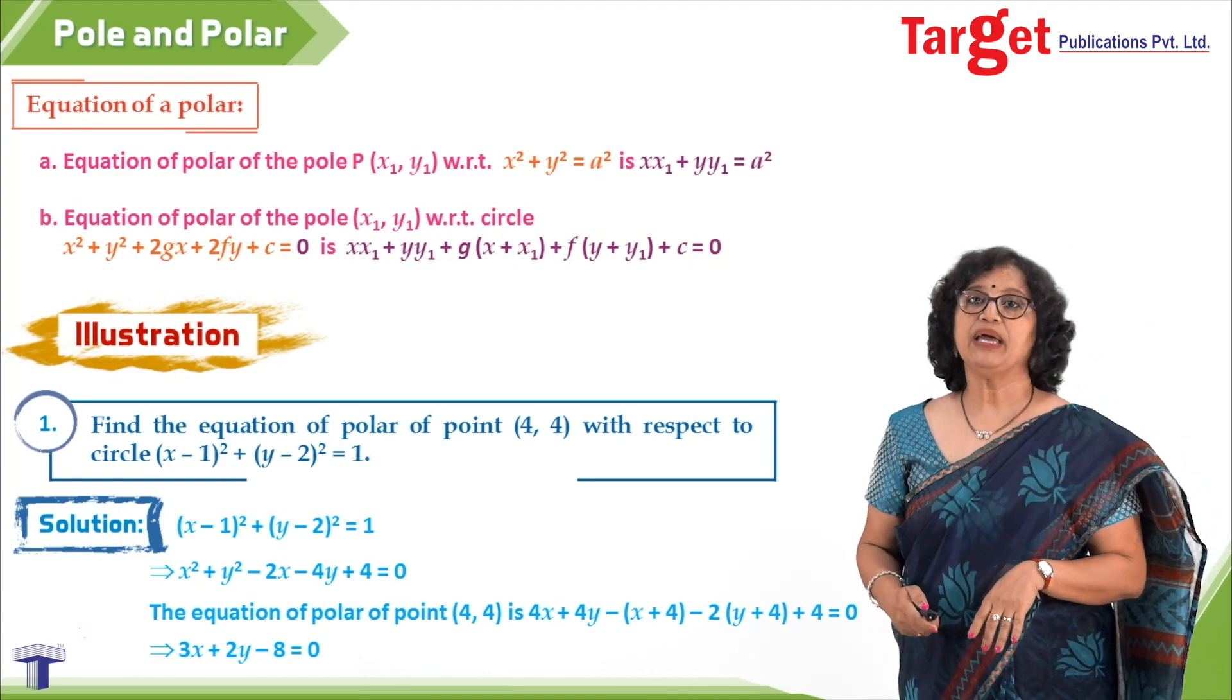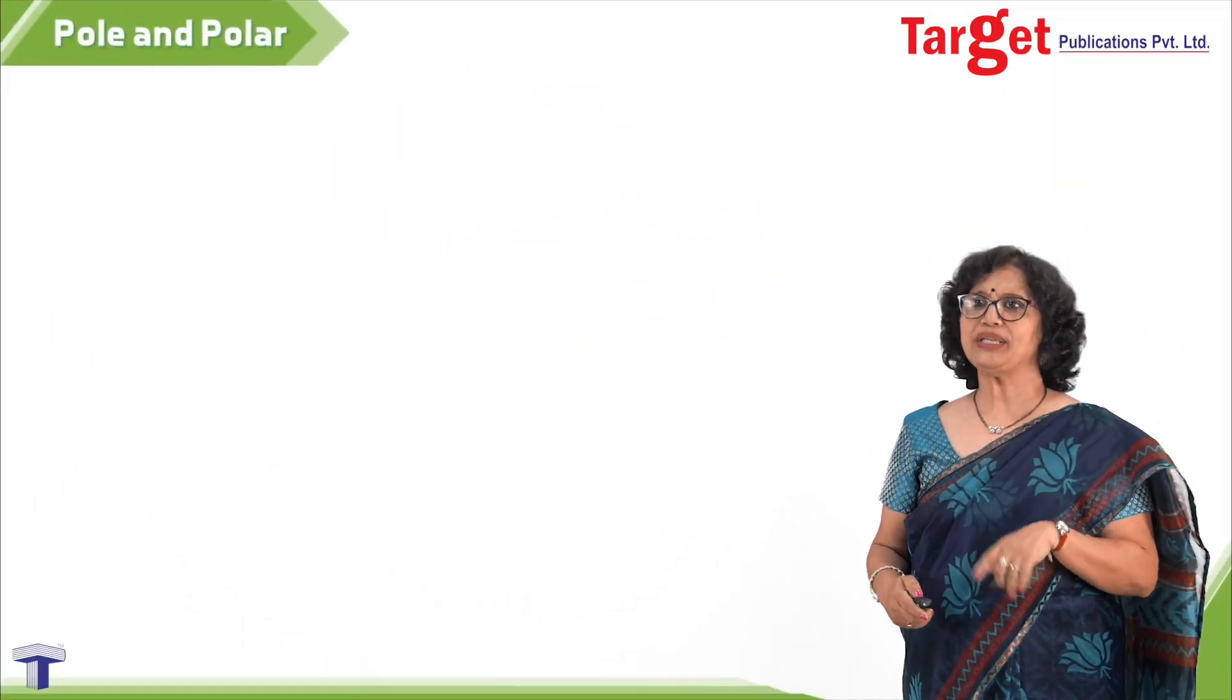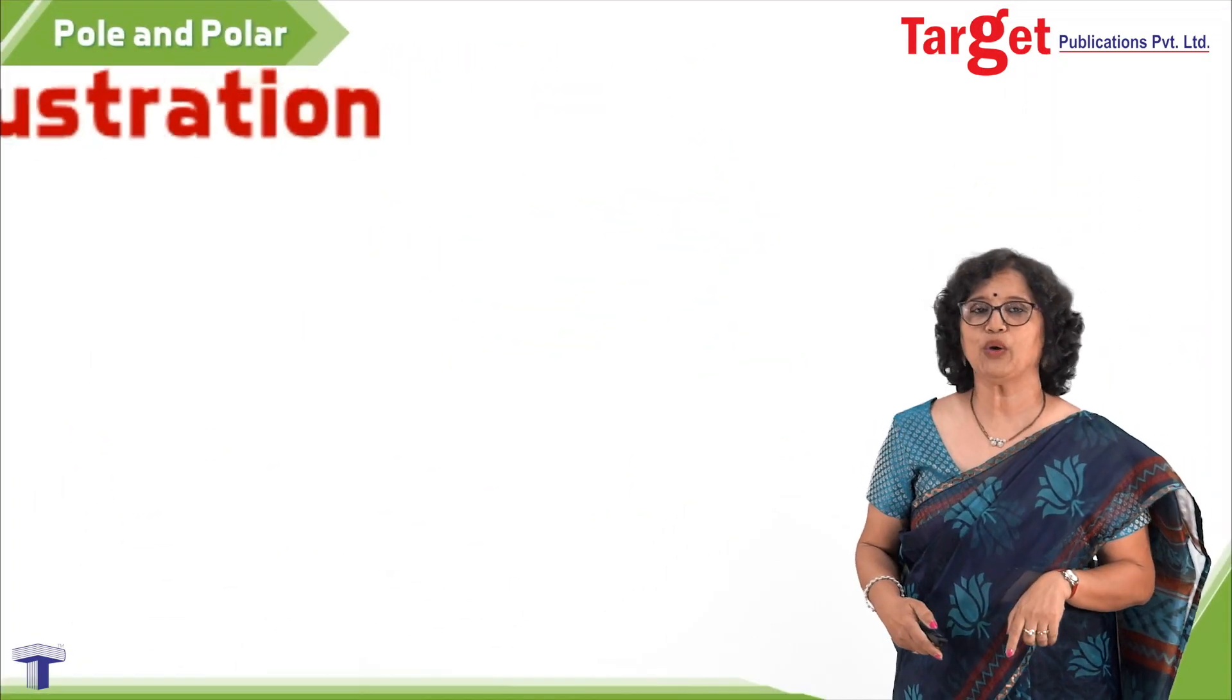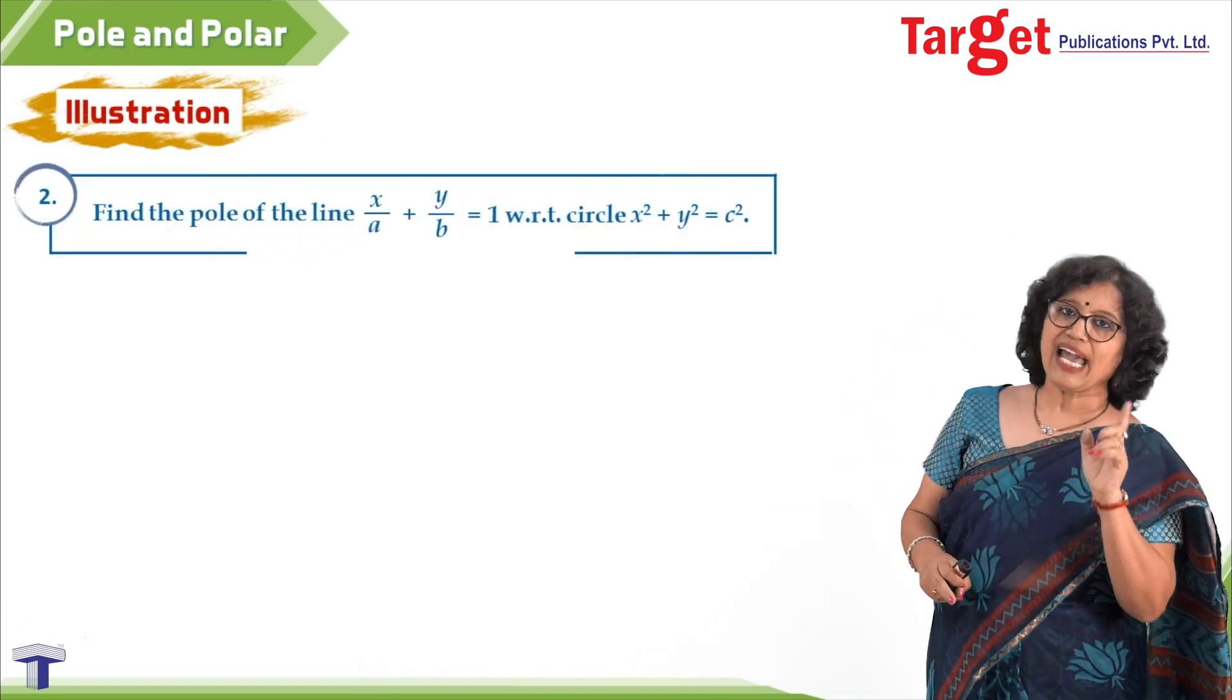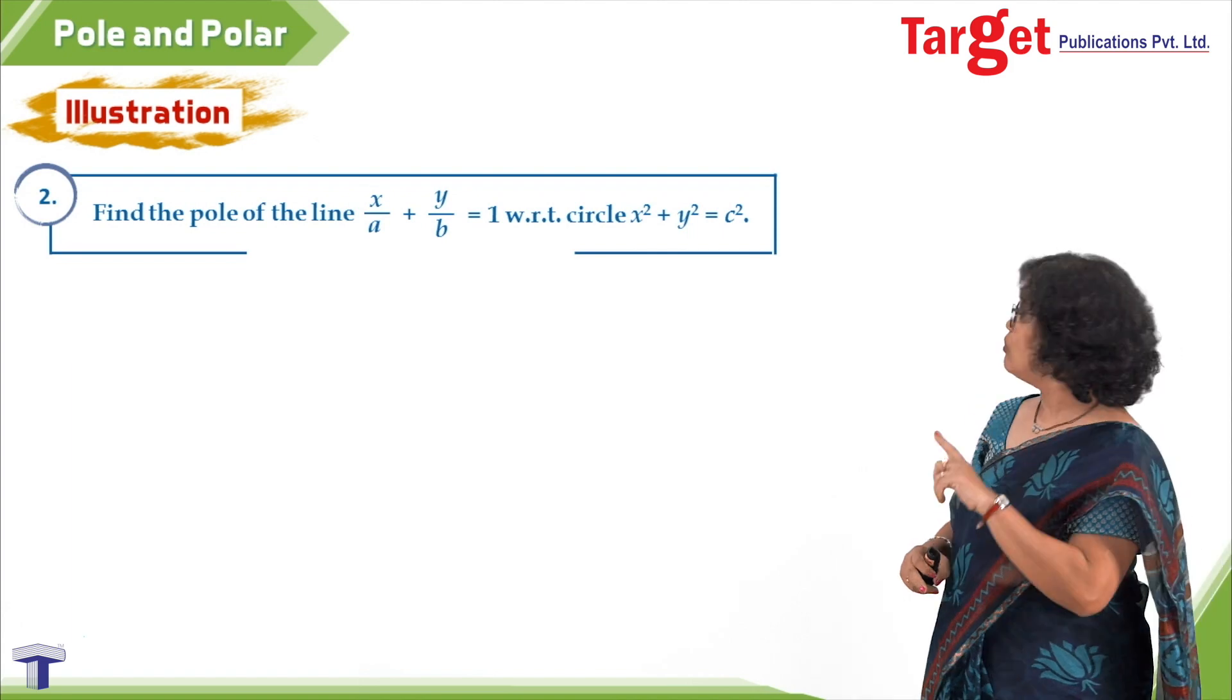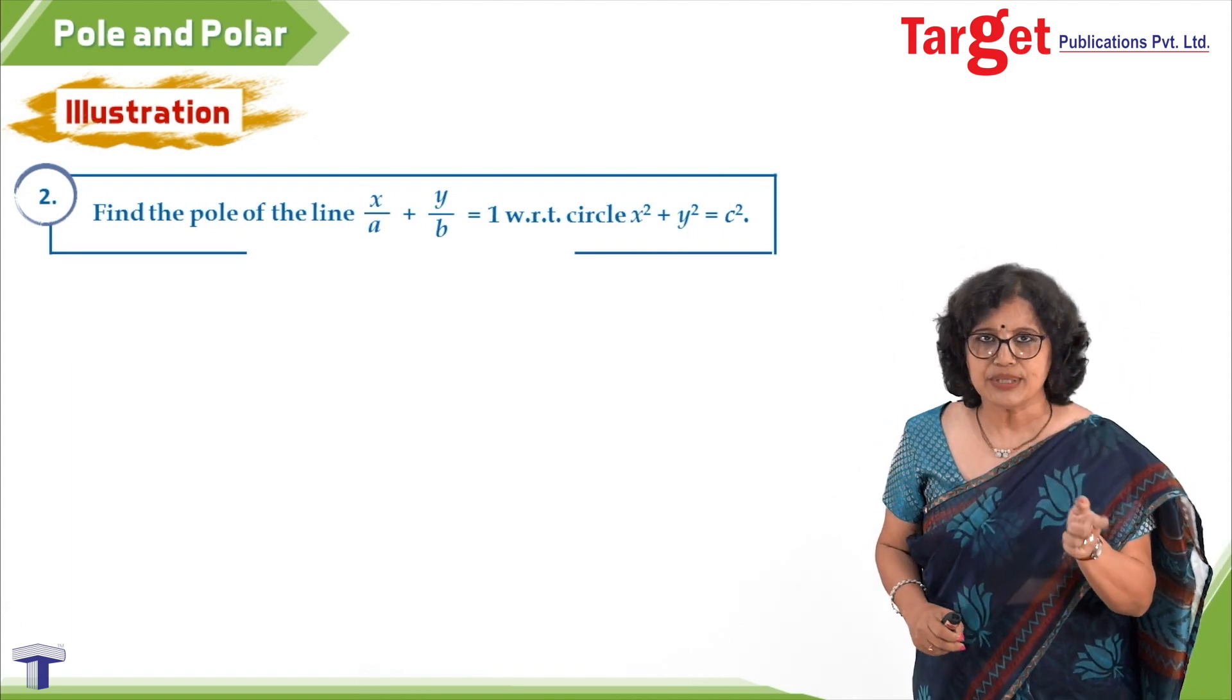Let us proceed further. The next one is that I take one more illustration where we will be finding the pole. My next illustration is: find the pole of the line x/a + y/b = 1 with respect to the circle x² + y² = c².